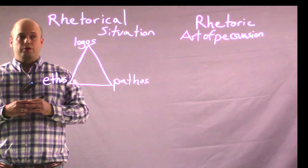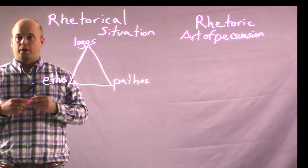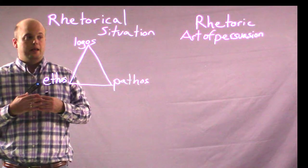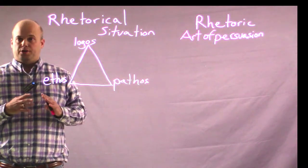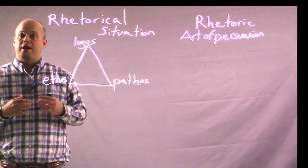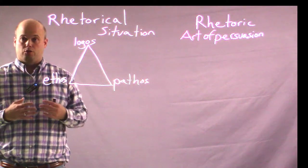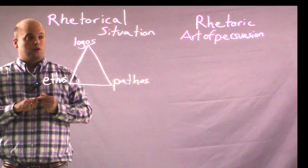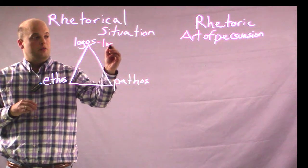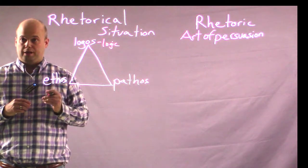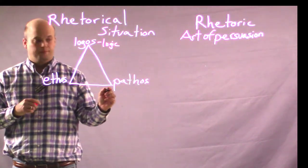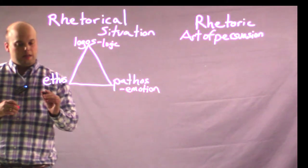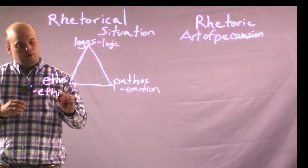I want to present to you the rhetorical situation. This is something that Aristotle defined for us. He said that there are three main parts to the rhetorical situation — three main appeals. The first being logos, which is another word for logic, a logical appeal. Pathos, an emotional appeal. And ethos, an ethical appeal.